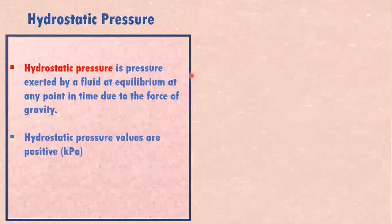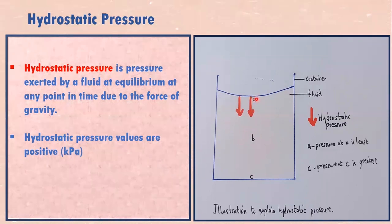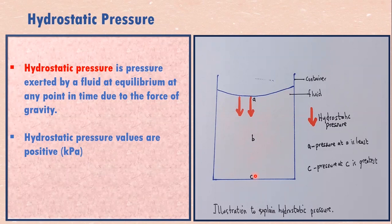What is hydrostatic pressure? Pressure exerted by fluid due to gravity. We have this fluid, and at a point like A, the fluid is exerting pressure. The mass with gravity acting on it is weight. The weight exerts pressure, and pressure at B will be bigger and pressure at C greatest. That is what hydrostatic pressure is. Hydrostatic pressure values are positive Pascals.